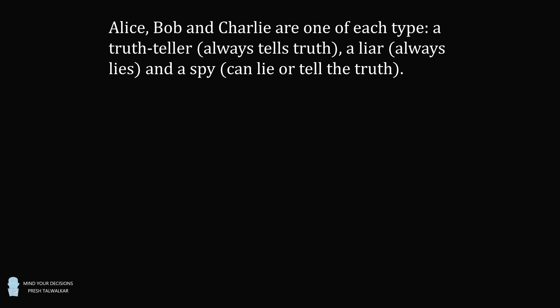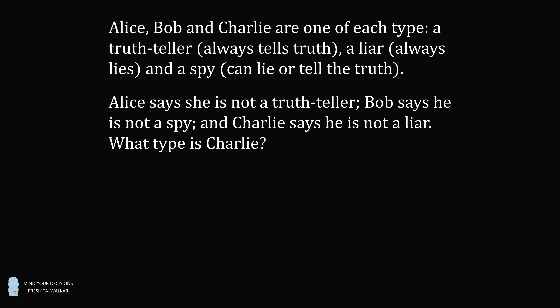Problem 1. Alice, Bob, and Charlie are one of each type: a truth teller that always tells the truth, a liar that always lies, and a spy that can lie or tell the truth. Alice says she is not a truth teller. Bob says he is not a spy. And Charlie says he is not a liar. What type is Charlie?